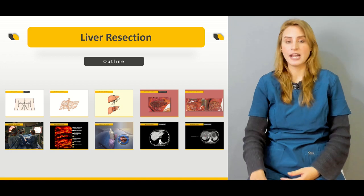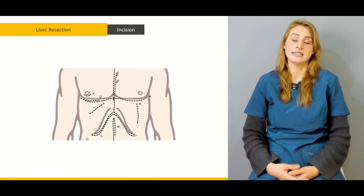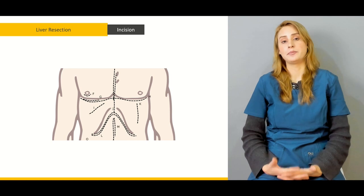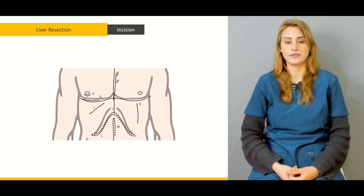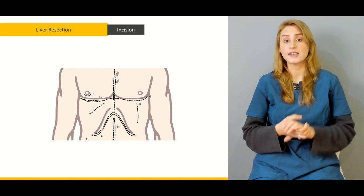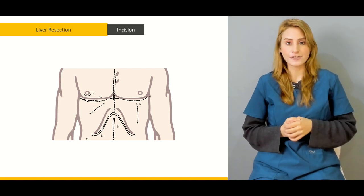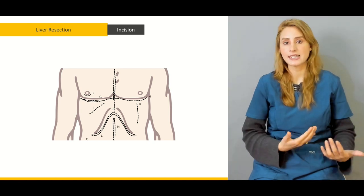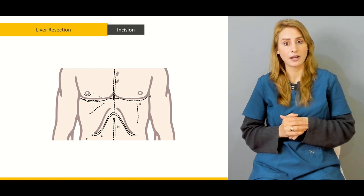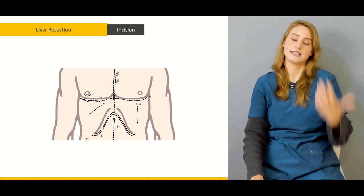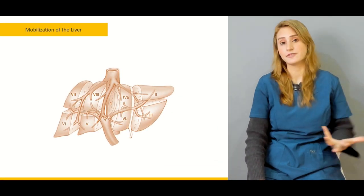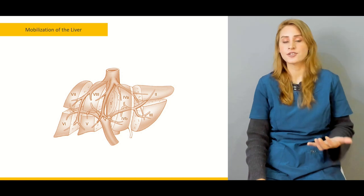We'll be talking about the incisions which we actually need for proper exposure. For liver resection, proper exposure of the liver is important, so a proper incision should be made — like the thoracoabdominal incisions, or right upper transverse incision extending to the midline. Another incision which can be used is the right subcostal extending to the xiphoid process and extending to the left hypochondrium as well. We'll be talking about the types of incisions and which incision should be made for proper exposure of the liver.